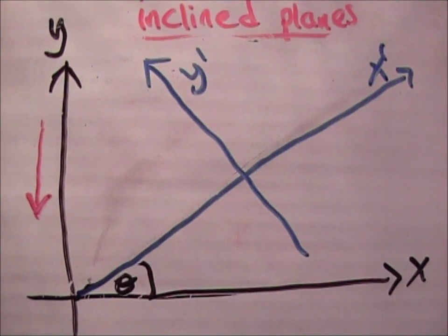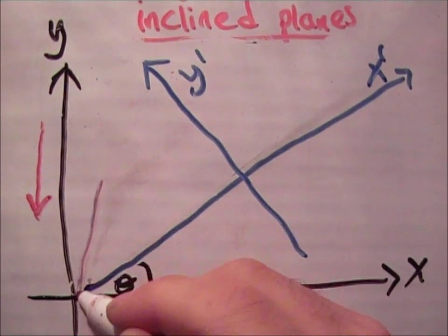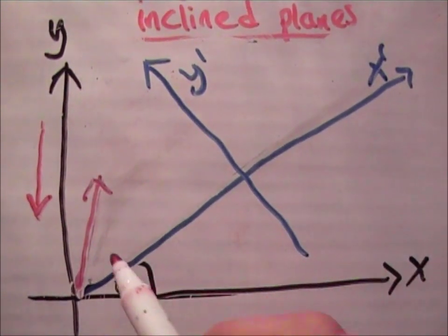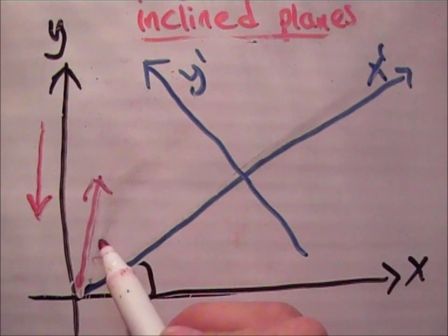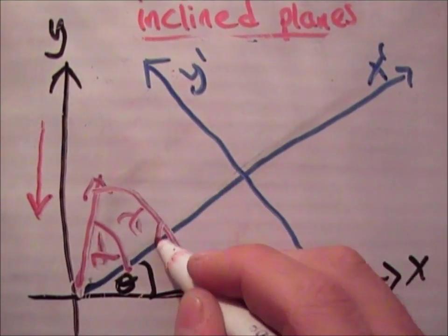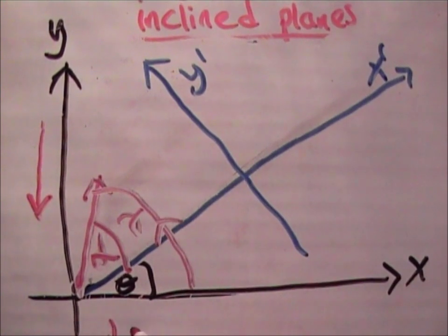Then your projectile here in red would be projected at an angle alpha. And this angle here is gamma. Therefore alpha is equal to gamma minus theta.